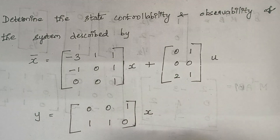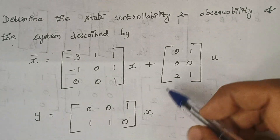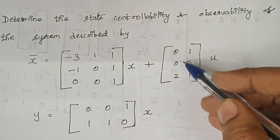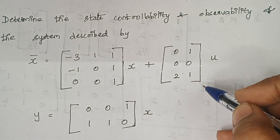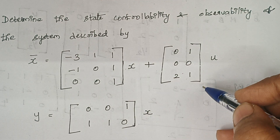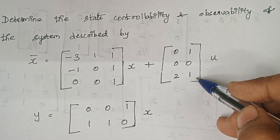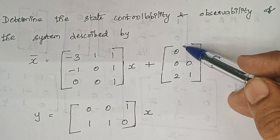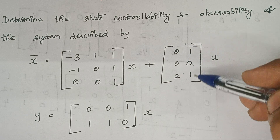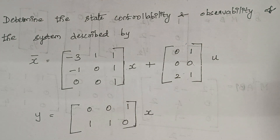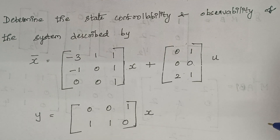In the previous problem we have seen B and C matrices as 3×1 matrices. Here they are 3×2 type — the matrix has 3 rows and 2 columns. We will be getting a bit different answer but the procedure remains the same.